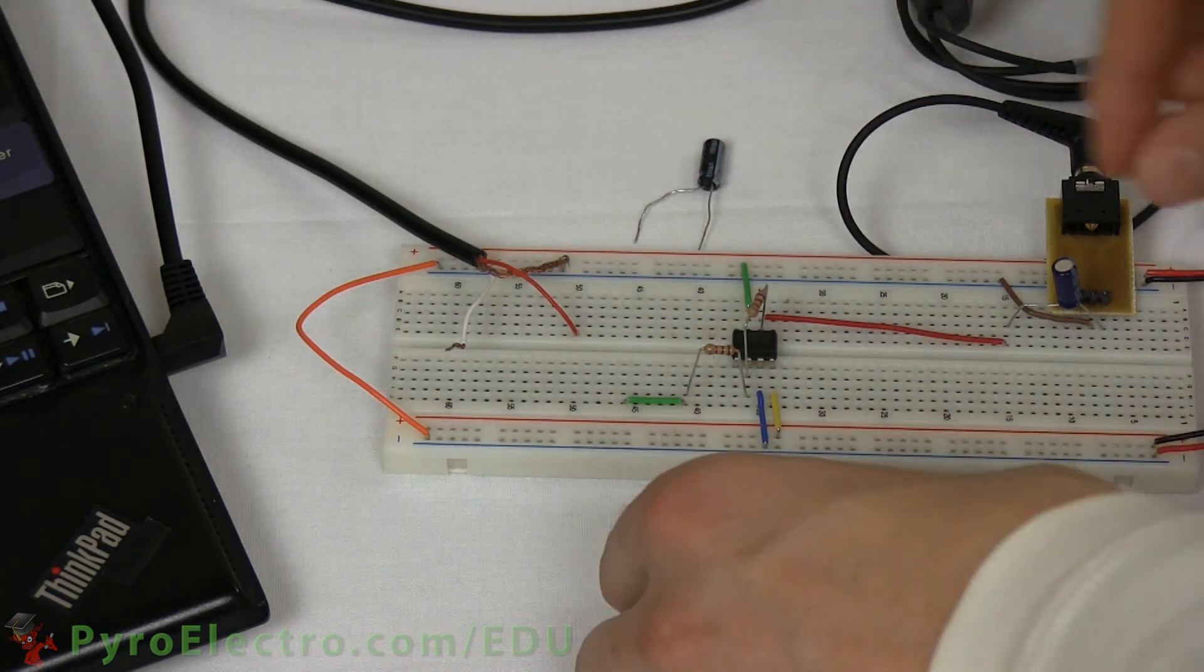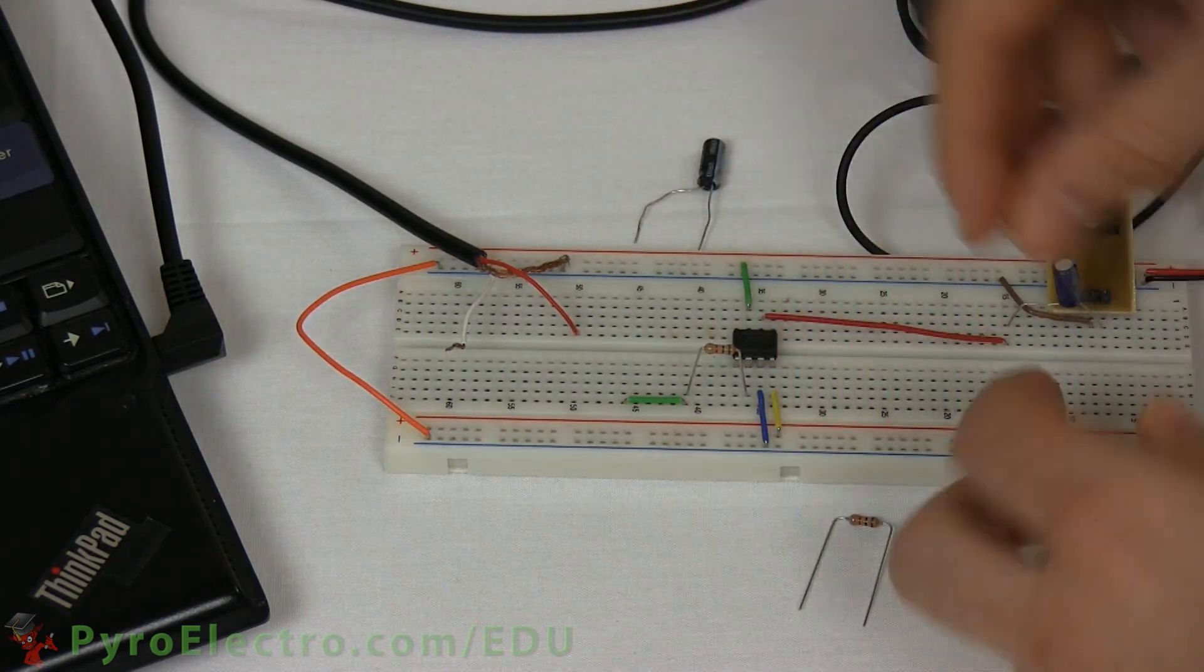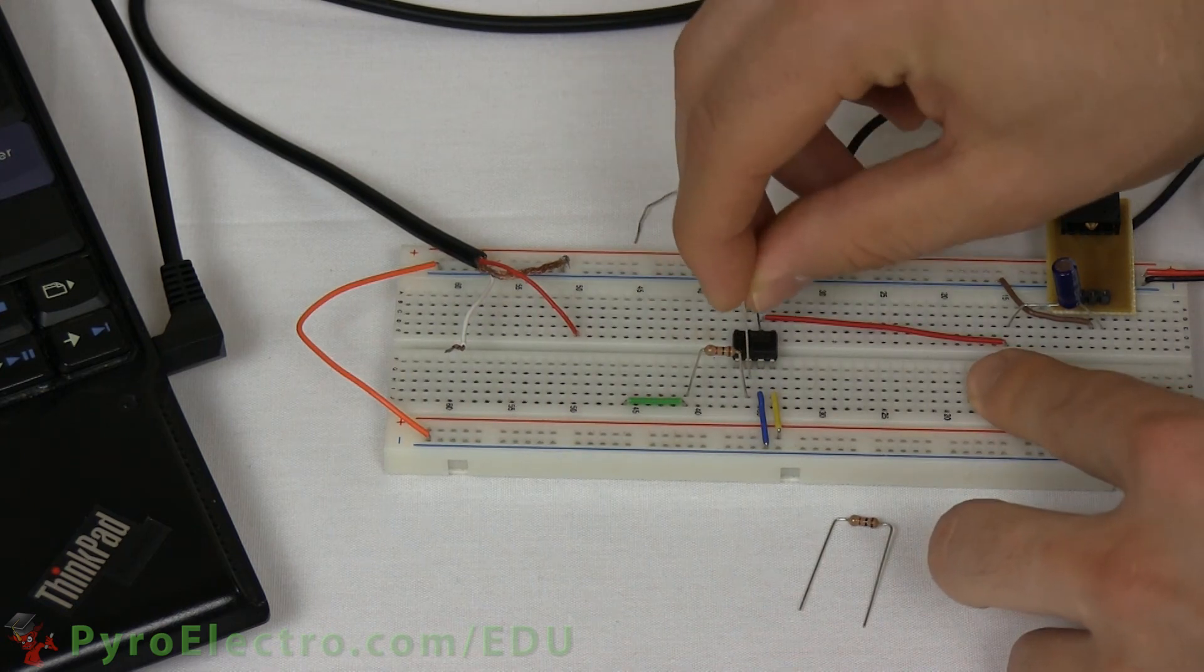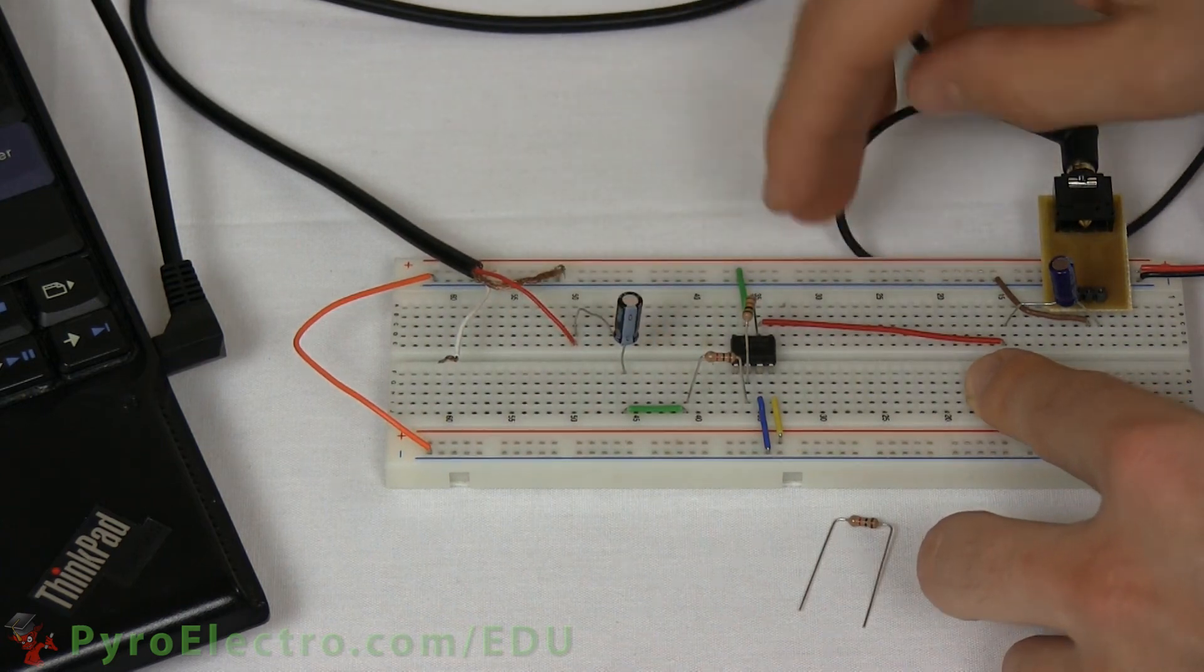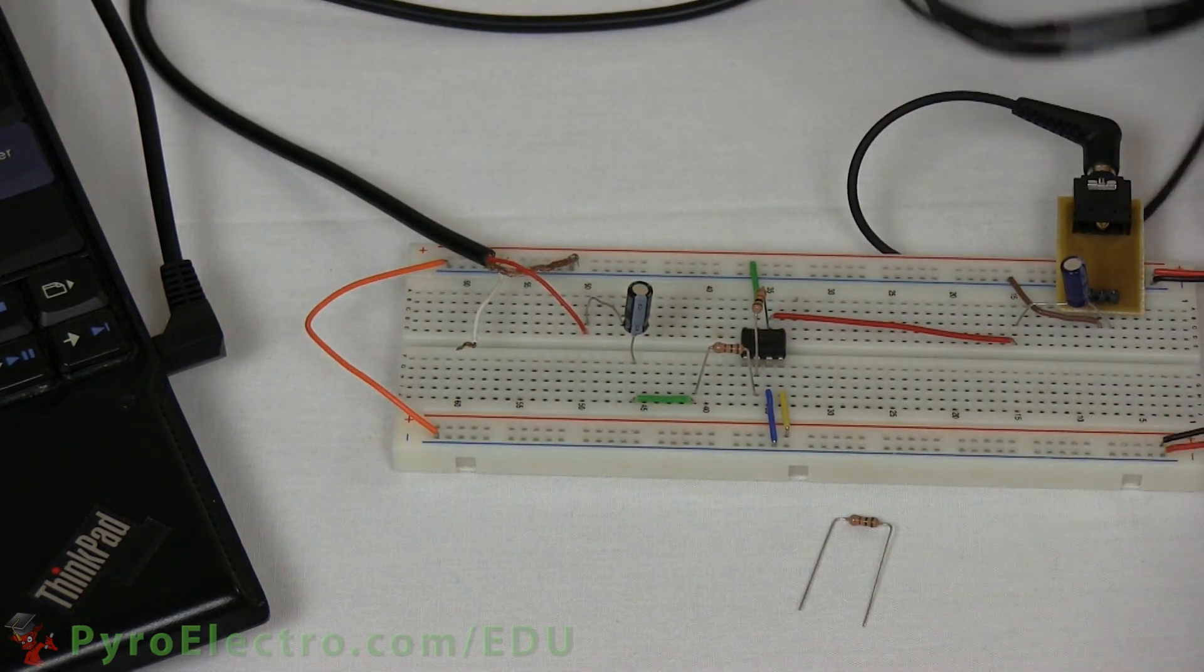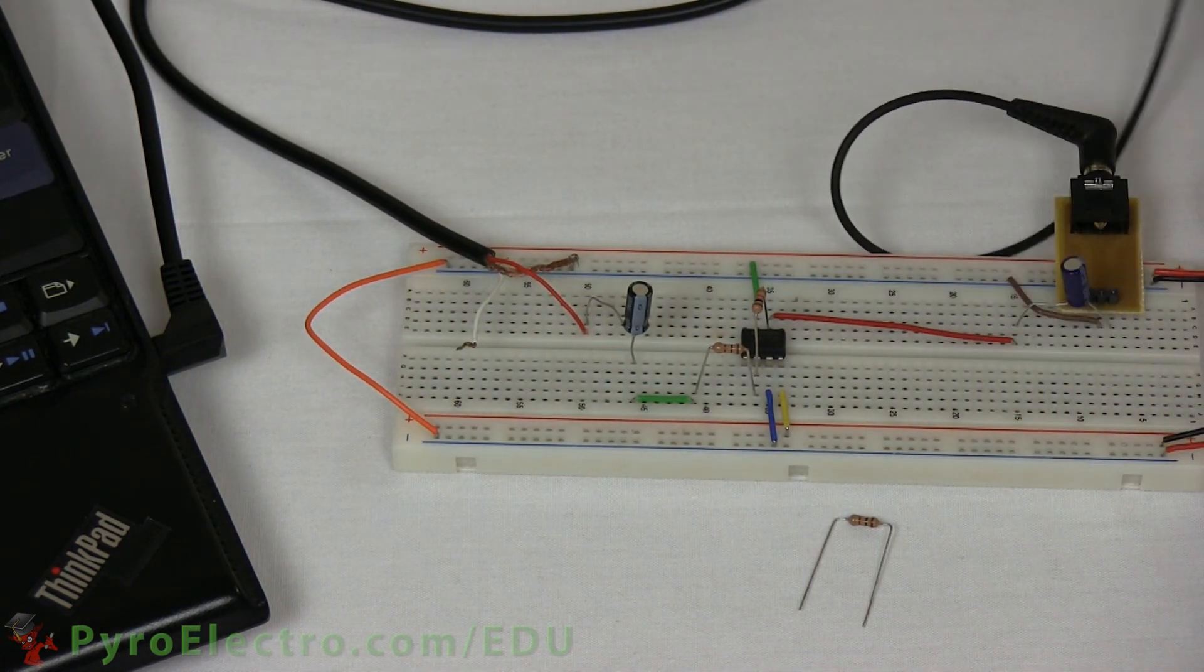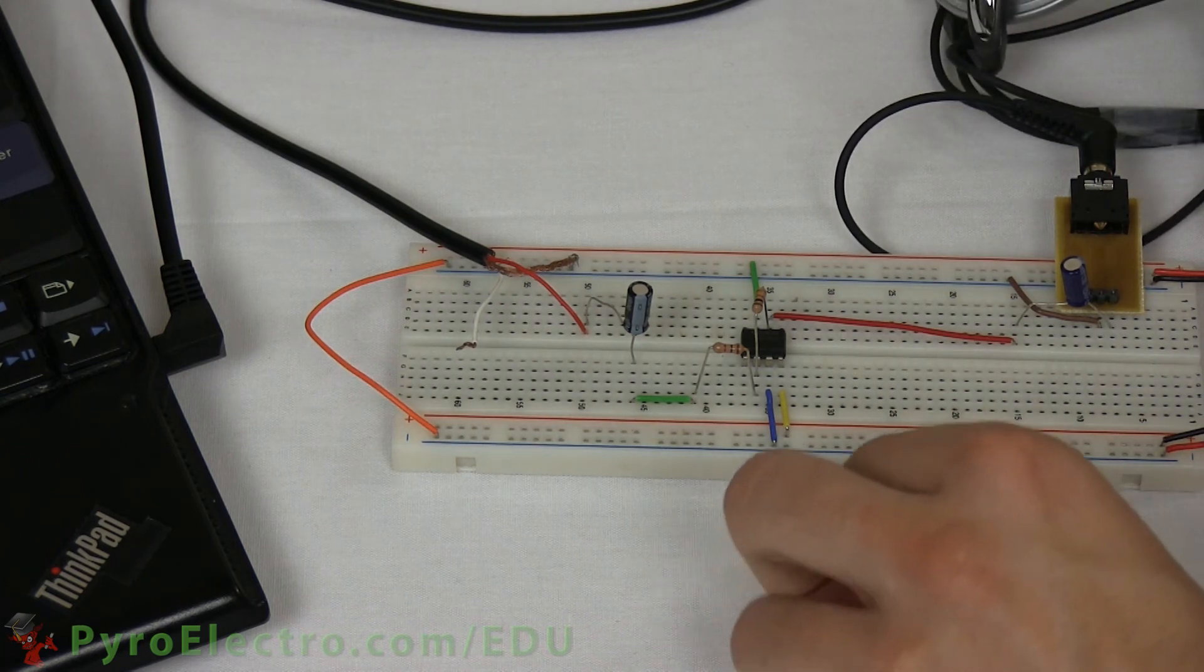Now we'll replace R2 with a 10kohm resistor, which will make the amplification 10 times. And now the output sound is obviously much, much louder.